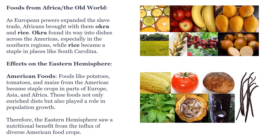Effects on the eastern hemisphere — American foods. Foods like potatoes, tomatoes, and maize or corn from the Americas became staple crops in parts of Europe, Asia, and Africa. These foods not only enriched diets, but also played a role in population growth. Therefore, the eastern hemisphere saw a nutritional benefit from the influx of diverse American food crops.